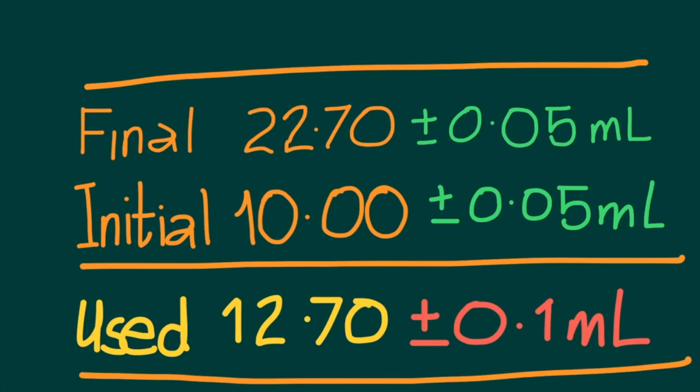So this is what our data table would look like for the burette readings. An initial value of 10.00 millilitres, plus or minus 0.05. A final value of 22.70, also with uncertainty 0.05. When you take the difference to get the titer value, you must take the sum of the two uncertainties, which comes to 0.1 milliliter. So the final titration value is 12.70 millilitres, plus or minus 0.1 milliliter.